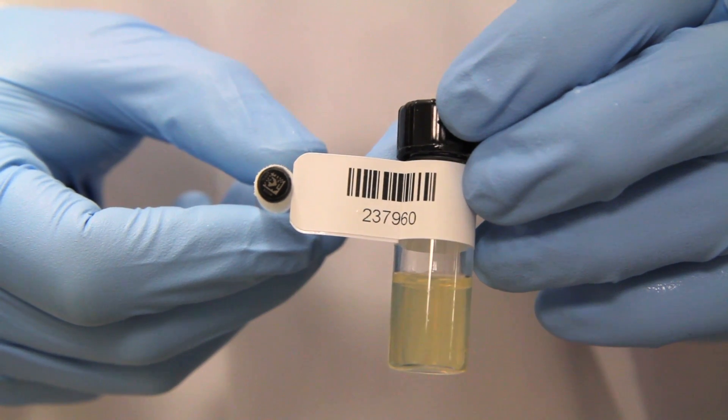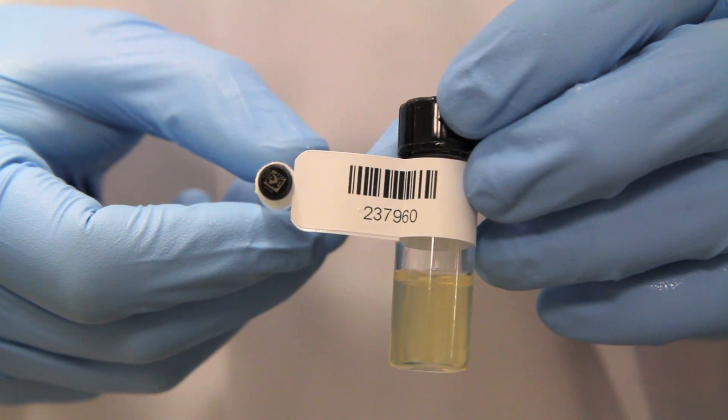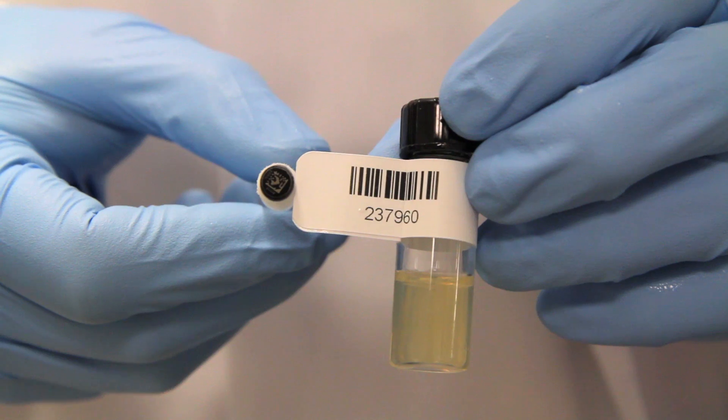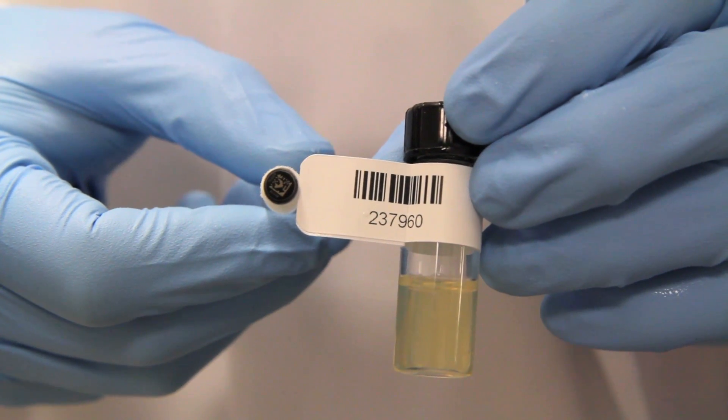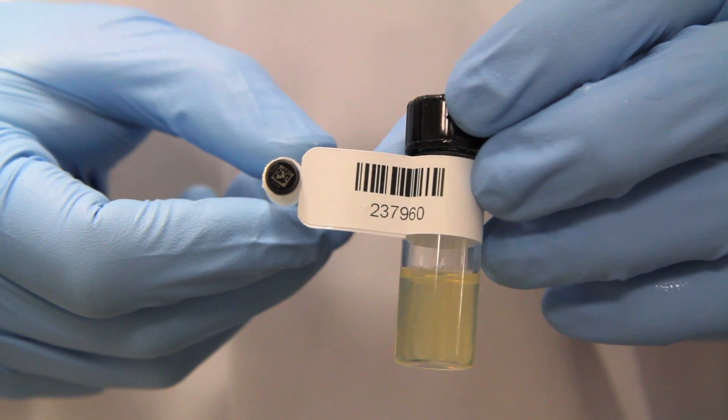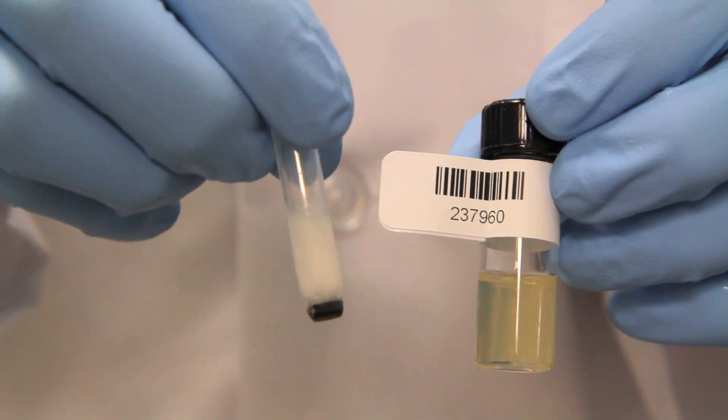Plasmids from Addgene are shipped as bacterial stabs. Addgene technicians match the 2D barcode on the bacterial glycerol stock tube with the barcode on each bacterial stab to ensure that the correct sample is shipped.